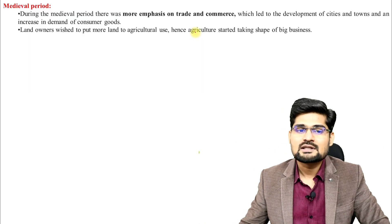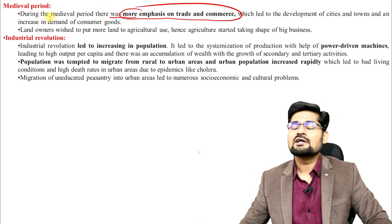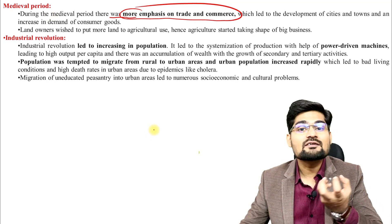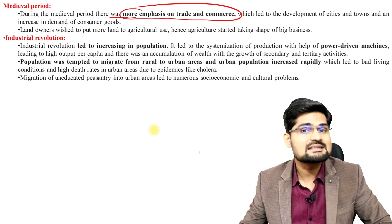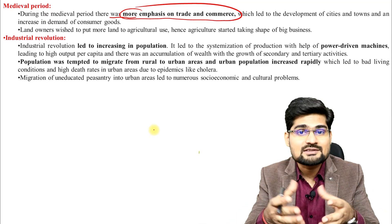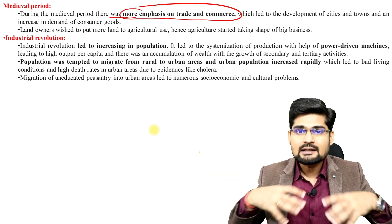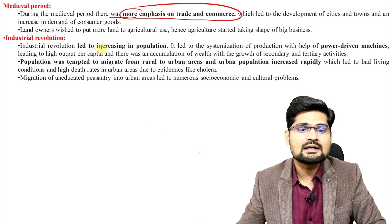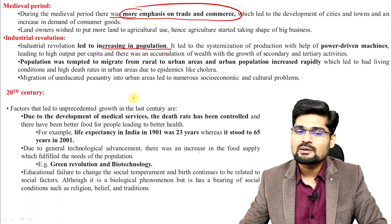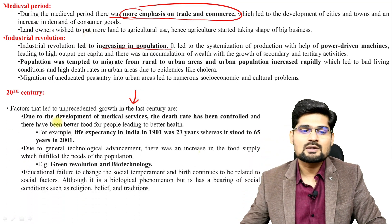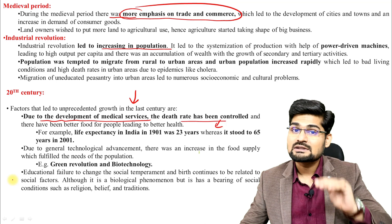In medieval times there was more emphasis on trade and commerce. Due to trade and commerce, the development of cities, towns, trading towns, and consumer goods started taking place and big business houses started settling. The economic structure changed and that impacted the social structure and family size. Then industrial revolution led to an increase in population, and further exponential growth started from the 18th century.